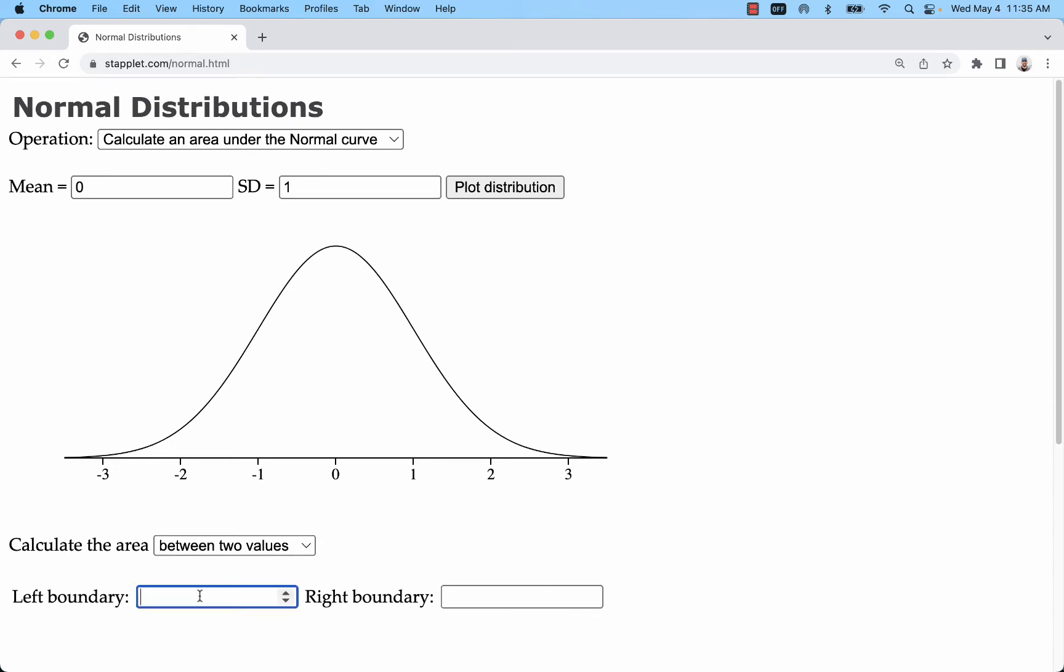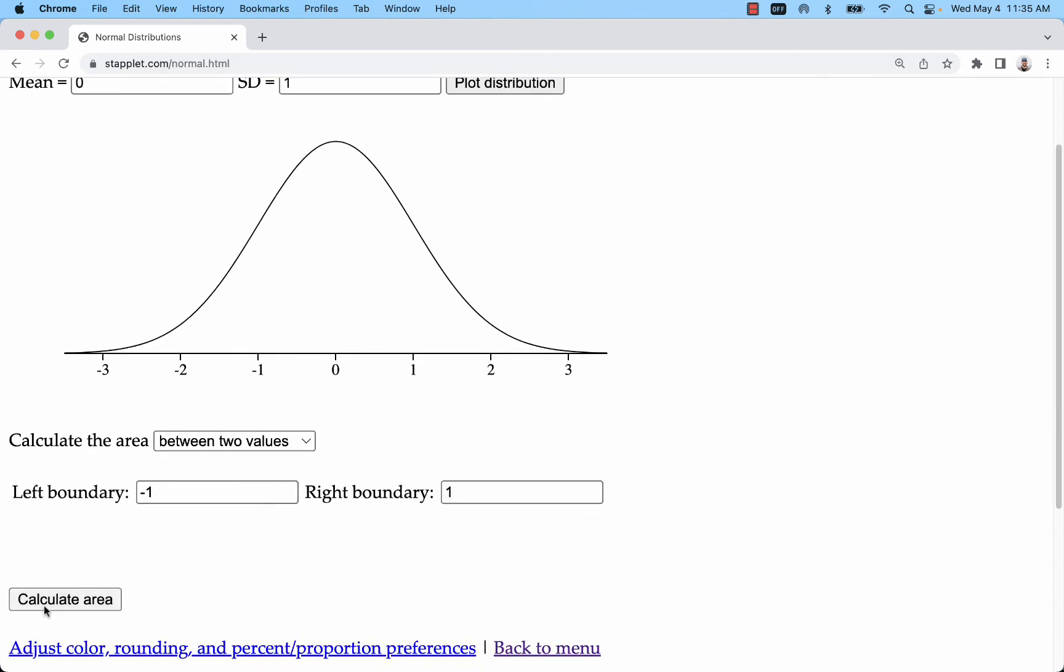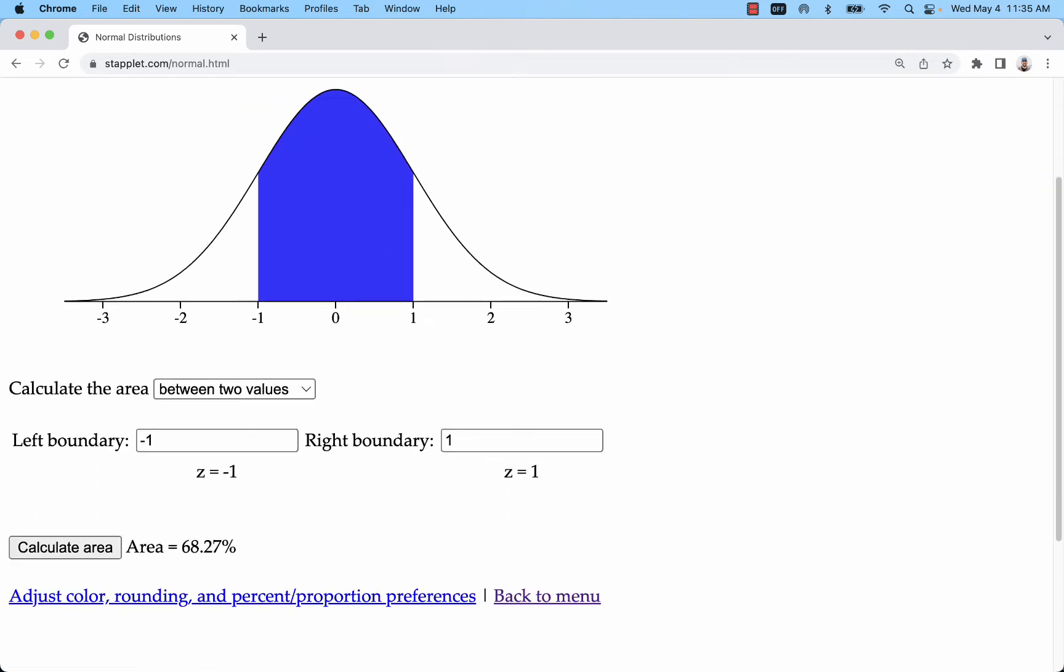An example of how you would use this, if you want to find the area between two values, so like I said, these are z-scores going from negative 1 to 1, it's about 68.27%. That's just like the empirical rule says.